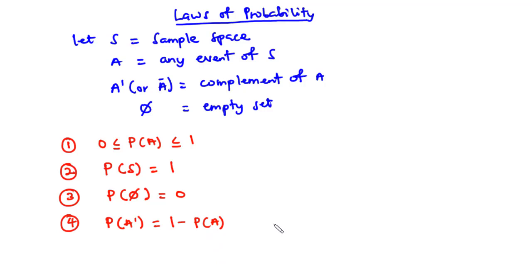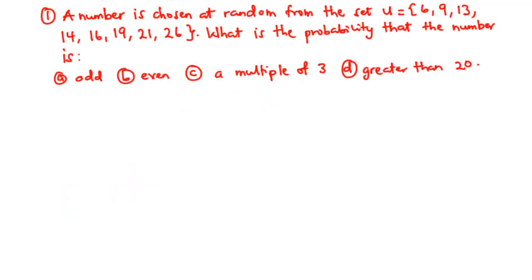Now let's solve some questions on the probability of an event. Example 1: A number is chosen at random from set U, where U = {6, 9, 13, 14, 16, 19, 21, 26}. What is the probability that the number is: A) odd, B) even, C) a multiple of 3, and D) greater than 20? Set U is made up of 8 elements. Now let's solve for A.